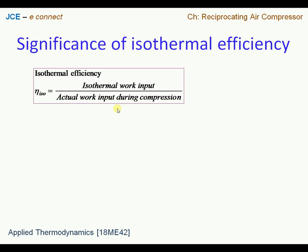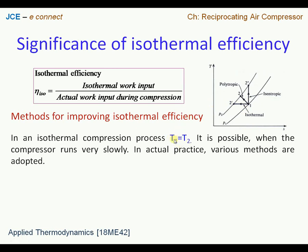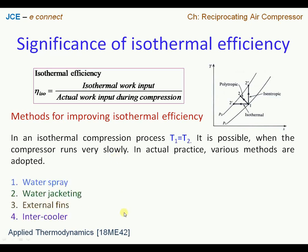Looking at a TS plot, the process from 1 to 2 dash signifies isothermal compression, where T1 equals T2. In reality, achieving T1 equal to T2 is not possible, but one can arrive close to this by adopting some methods. Running the compressor at a very slow RPM could help but may not meet end requirements. Therefore, we adopt a few methods to come closer to isothermal conditions. We have four such methods.